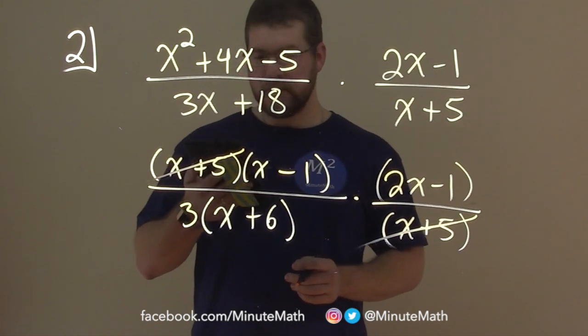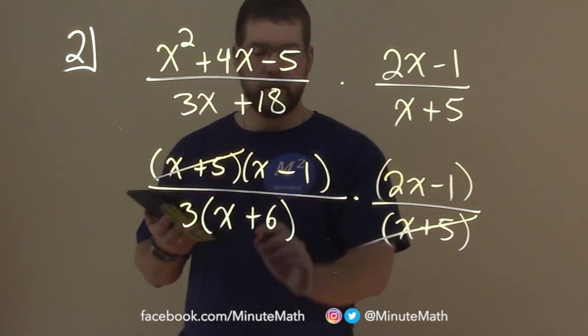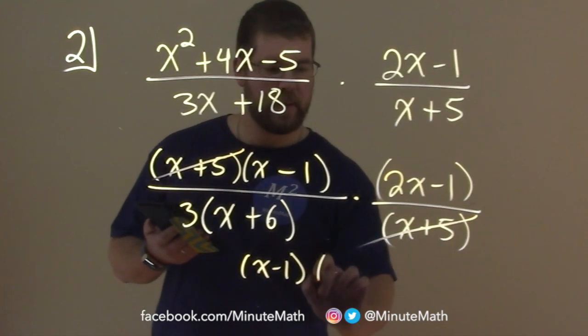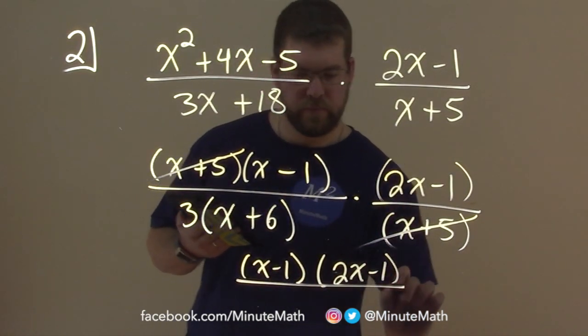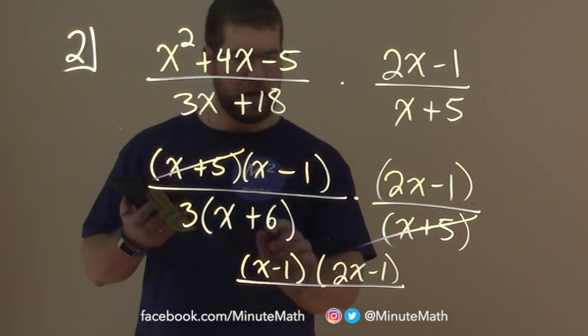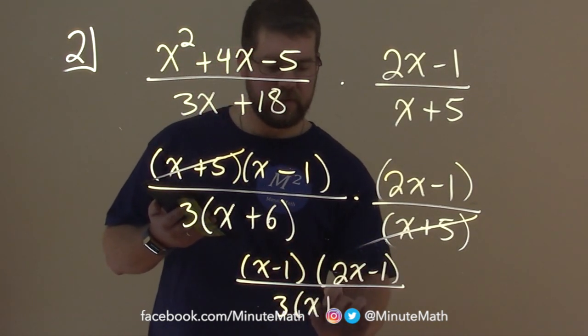And so now we're just left with what's left over. The numerator is just x minus 1 times 2x minus 1, and the denominator, we just have 3 times x plus 6.